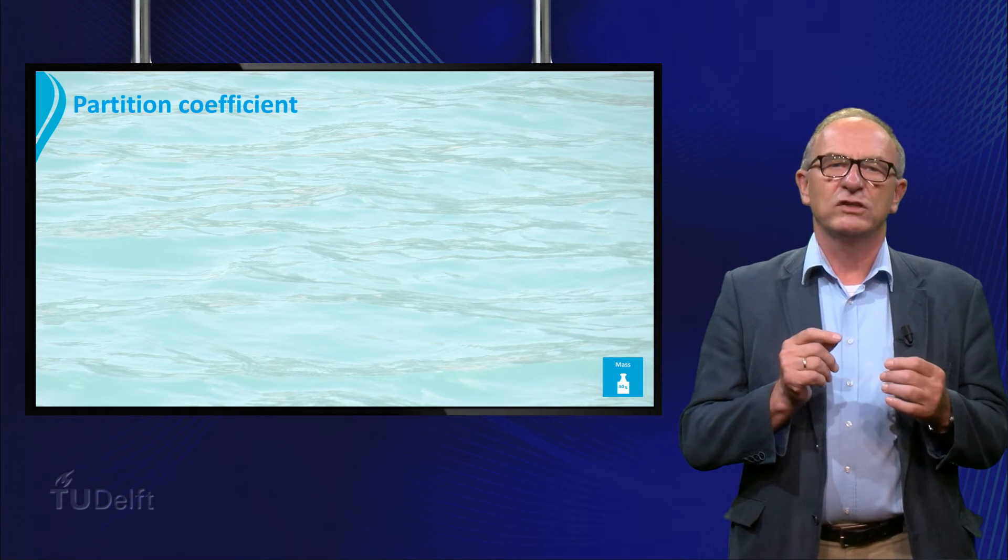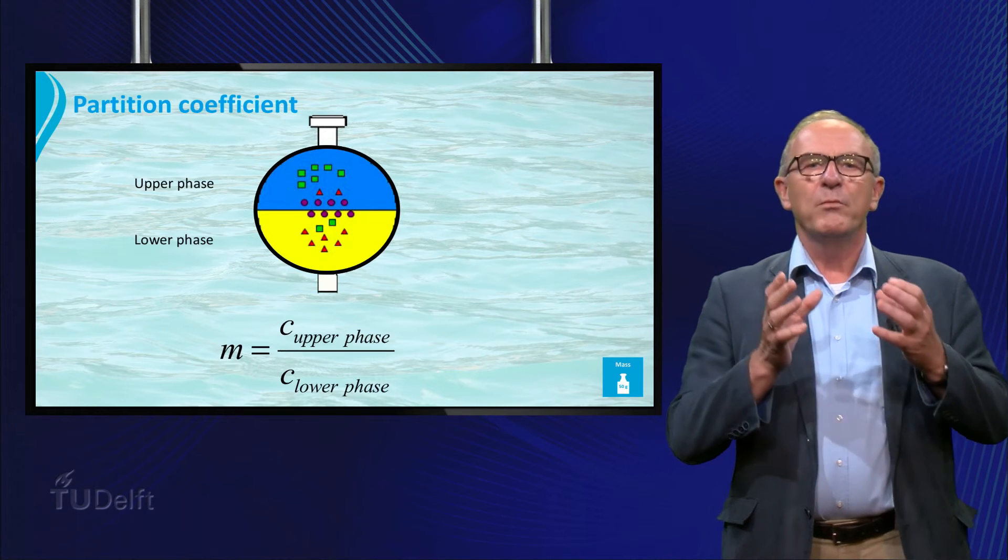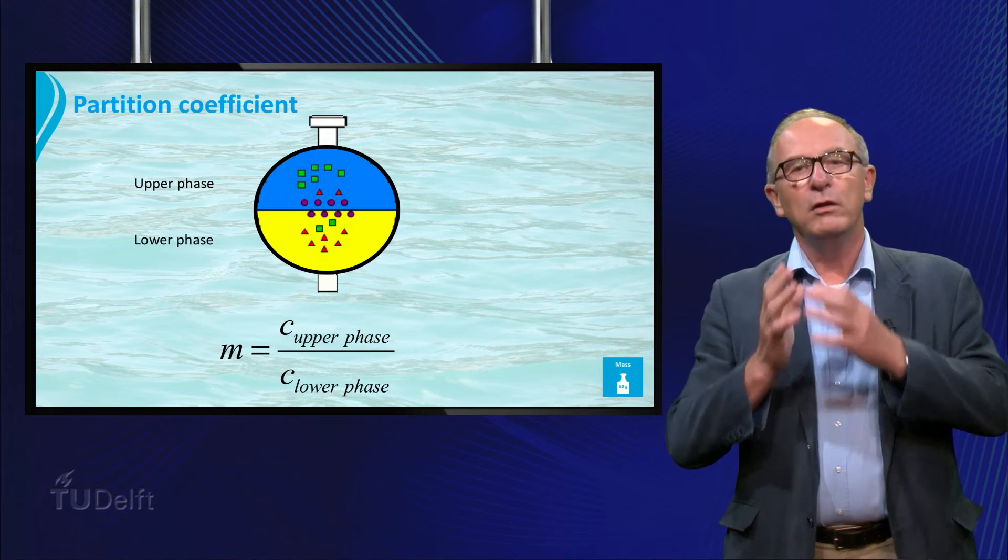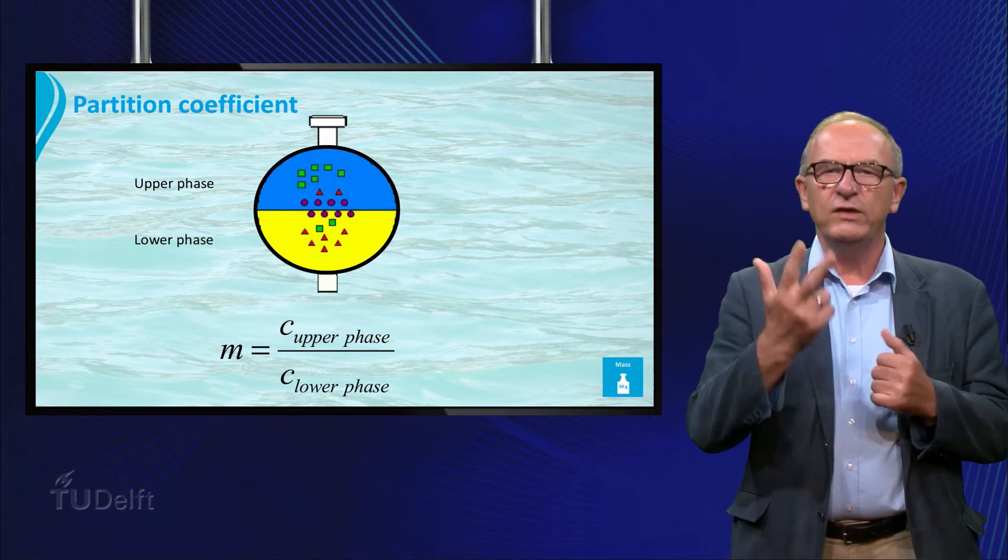Let's look at this sketch. We define the partition coefficient m here by the concentration of the component in the upper phase divided by the lower phase. In this sketch you can distinguish three situations.